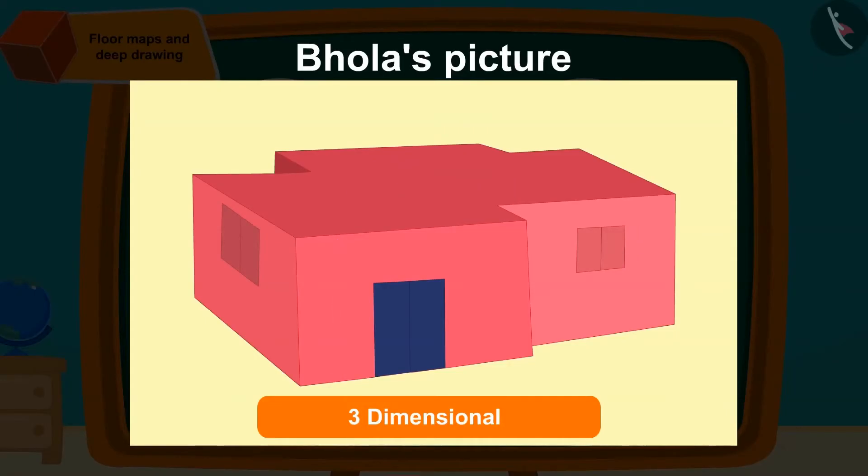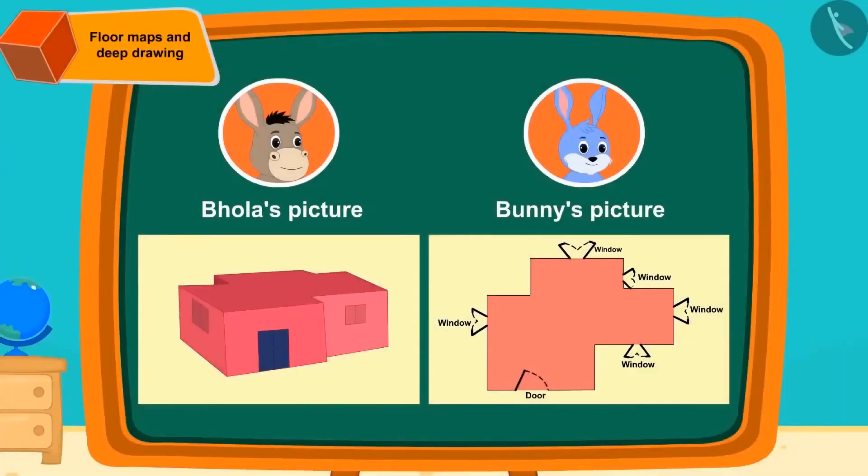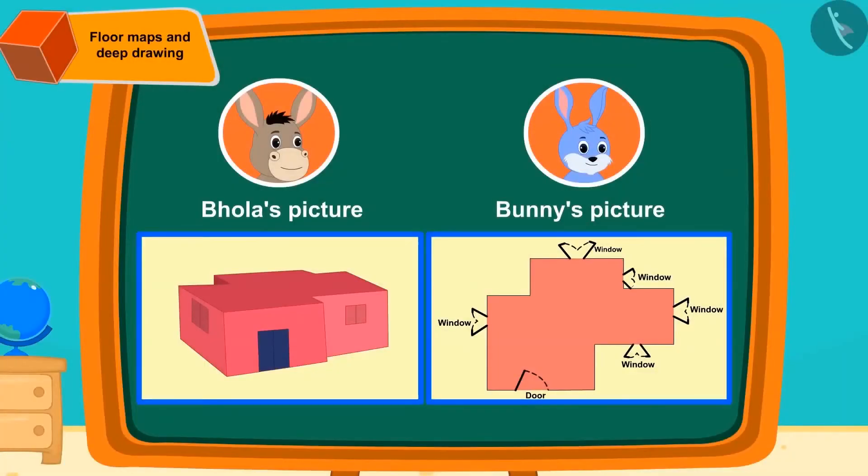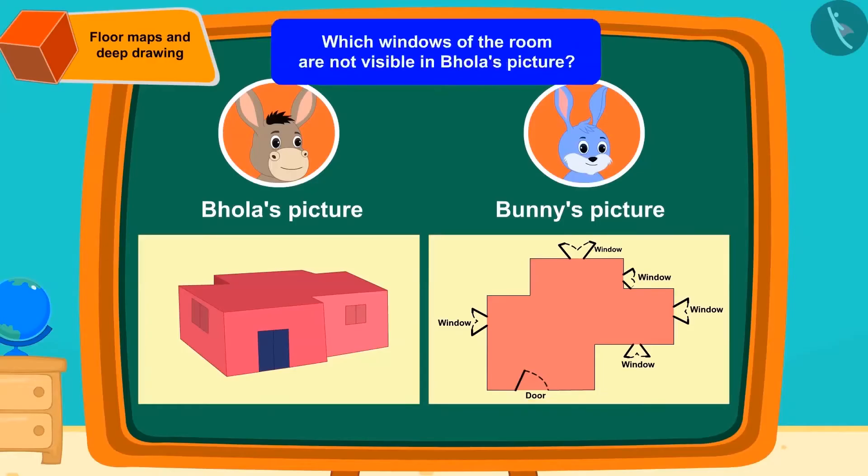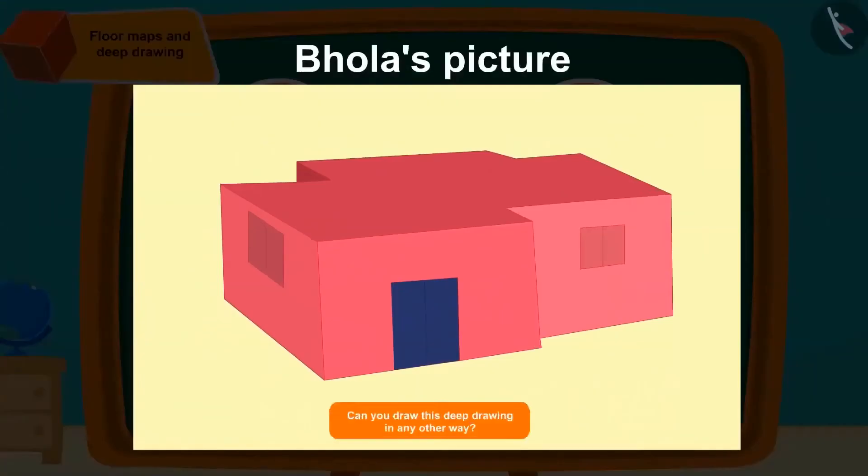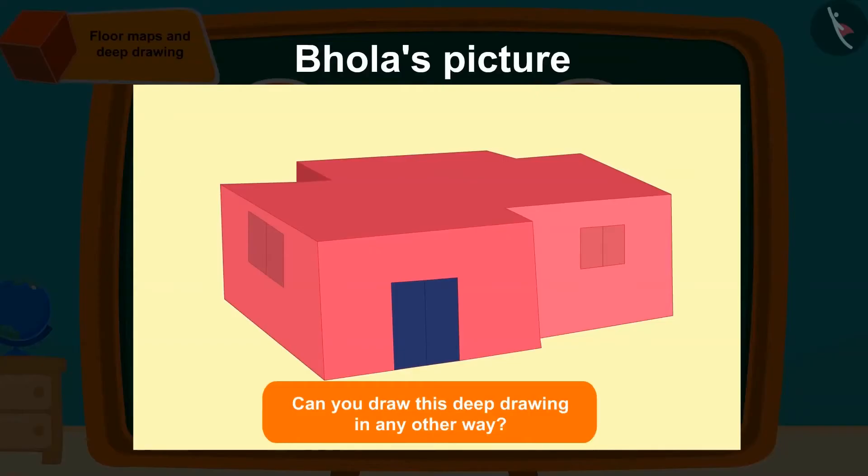Here are the pictures of the room Bholla and Bunny made. Can you tell which windows of the room are not visible in Bholla's picture? If you want, you can pause the video and find the answer to this question. Absolutely right, these windows are not seen in Bholla's pictures. Can Bholla make this deep drawing in any other way?